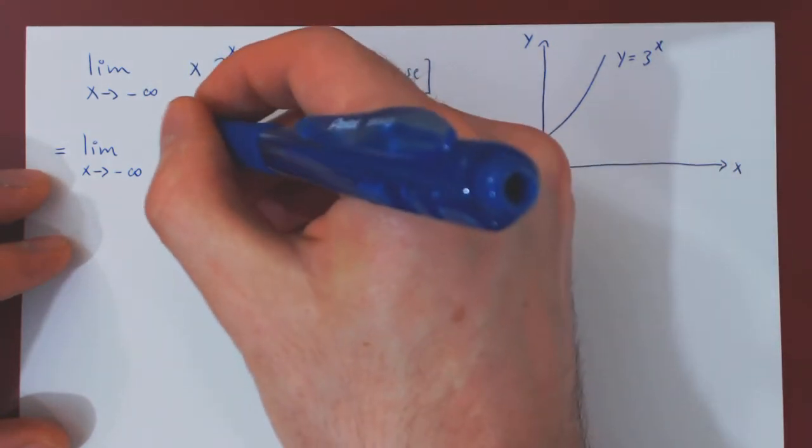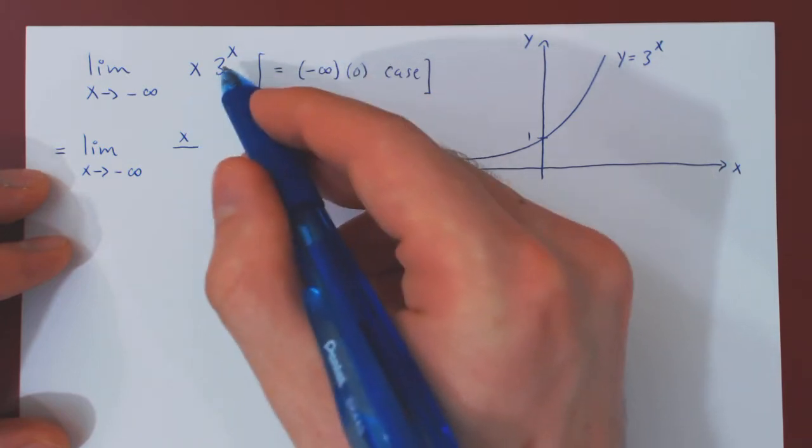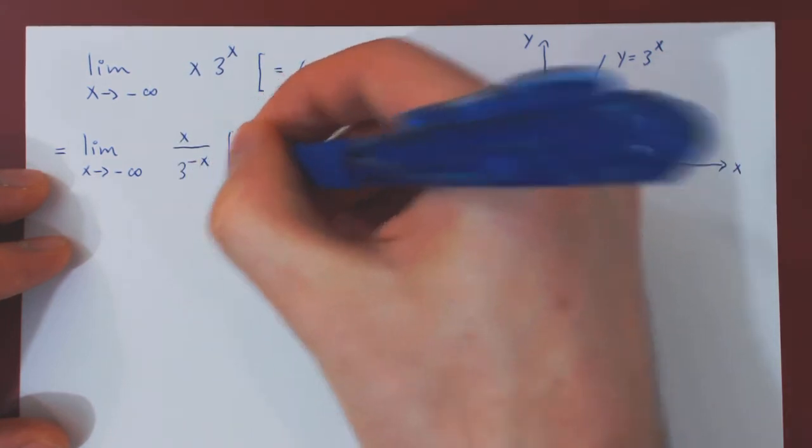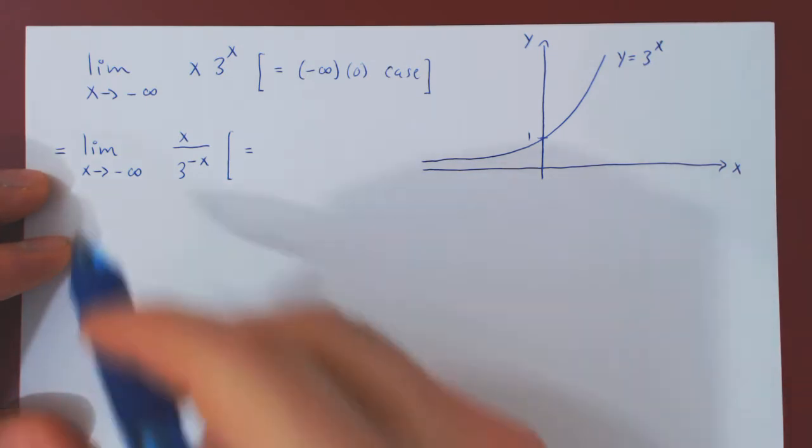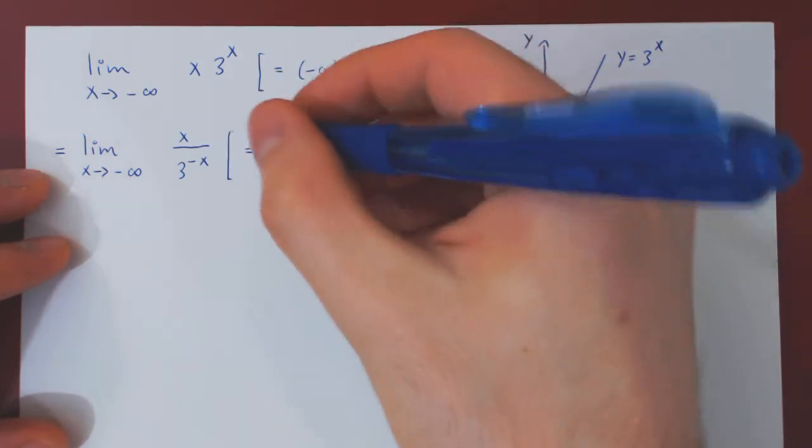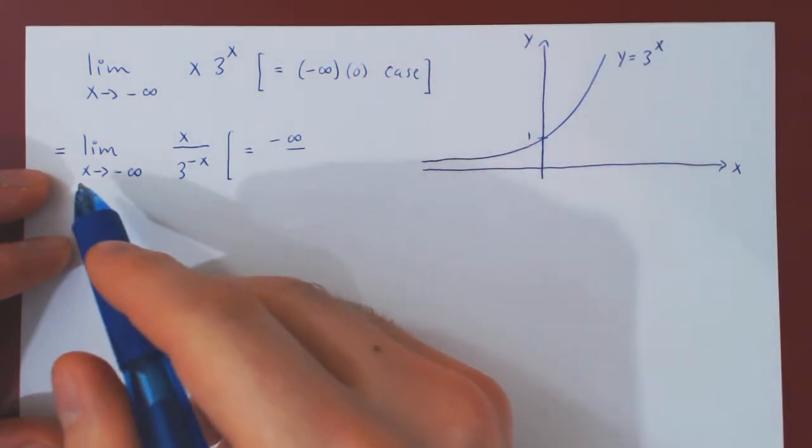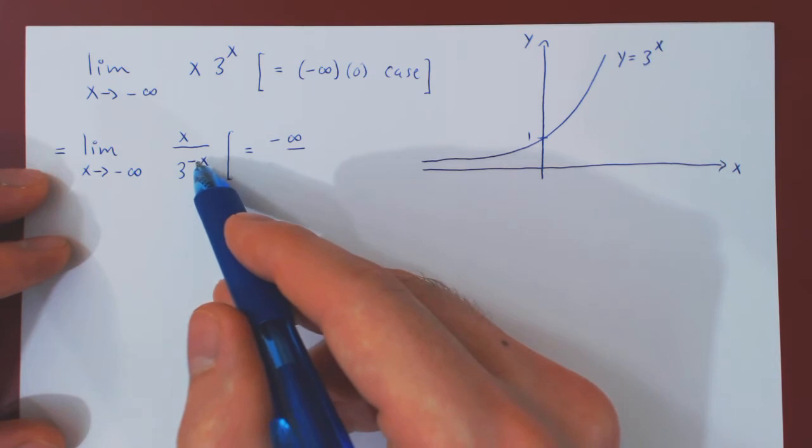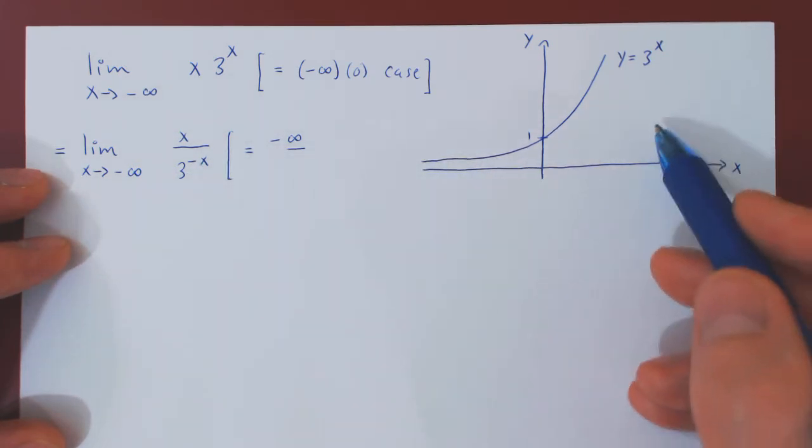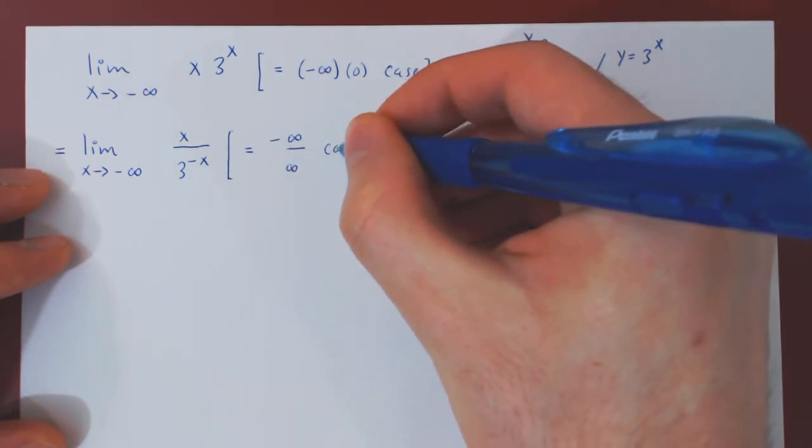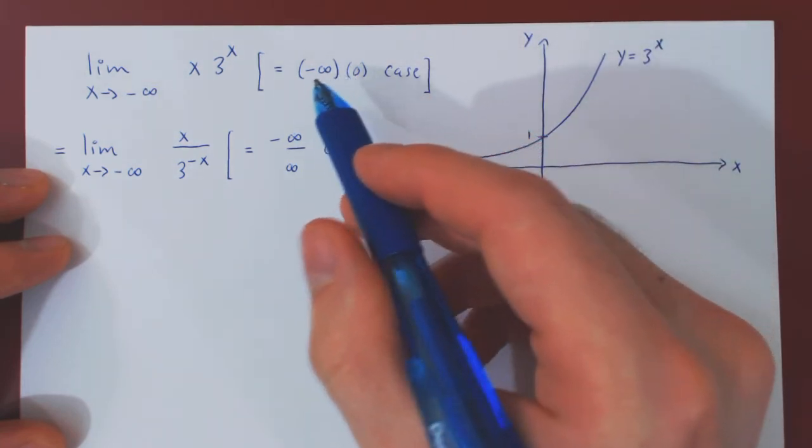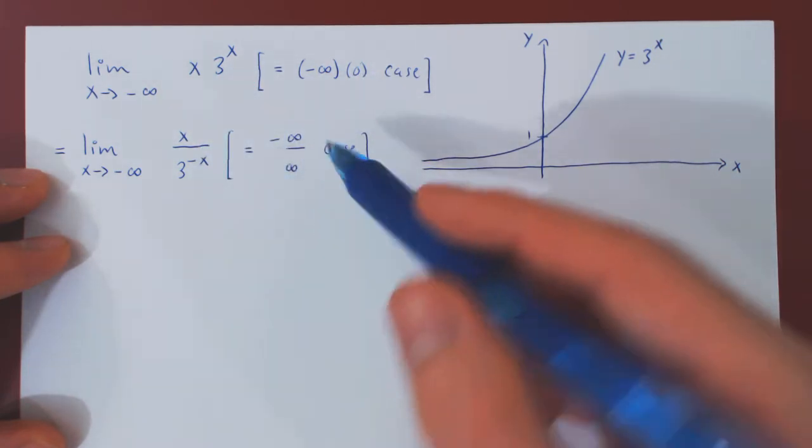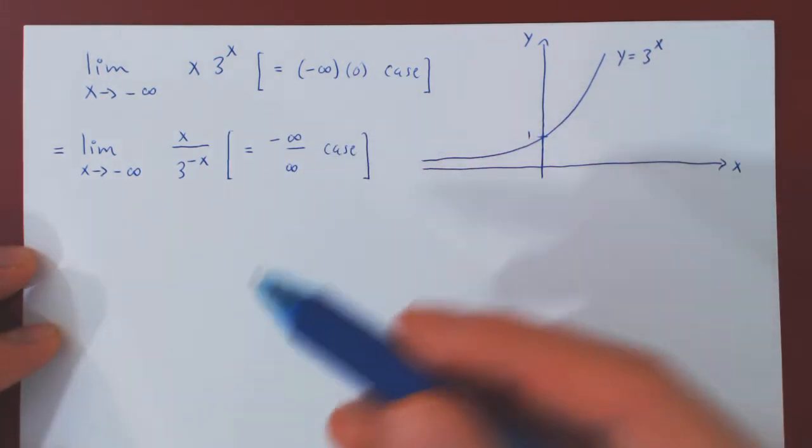So I will keep the x on the numerator, and if I send 3 to the x down, the power becomes negated, and it of course is 3 to the minus x. And I will have a very different case. As x goes to minus infinity, x goes to minus infinity over, and this is where it's interesting, as x goes to minus infinity, negative x will go to positive infinity, and 3 to the infinity will blow up to infinity. And now we have turned the initial case, which was negative infinity times 0, by a simple algebraic manipulation to a case that is negative over positive infinity. Now we can apply L'Hopital's rule.